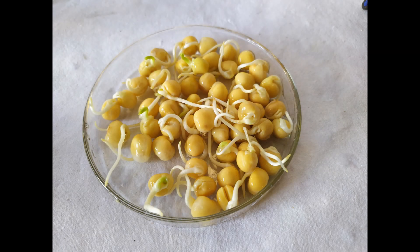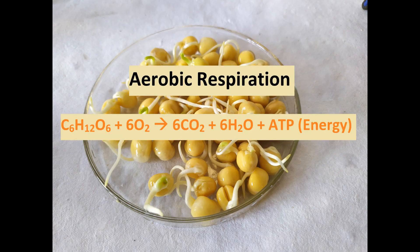Germinating seeds can respire both aerobically and anaerobically. They carry out aerobic respiration in the presence of free oxygen, whereas anaerobic respiration is carried out when they are deprived of oxygen. Aerobic respiration takes place in the cell mitochondria. It requires glucose and oxygen to produce carbon dioxide, water, and energy. Aerobic respiration may thus be represented by this equation.